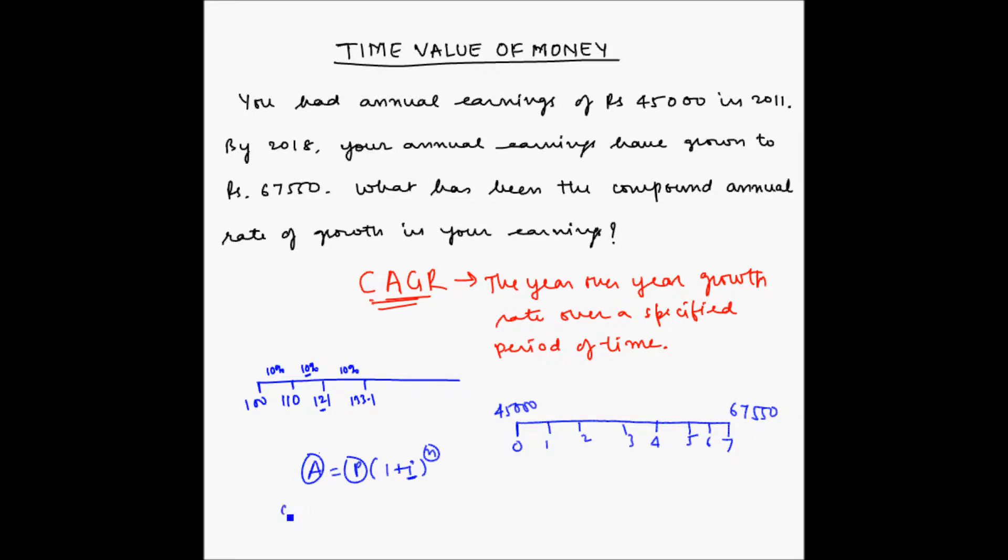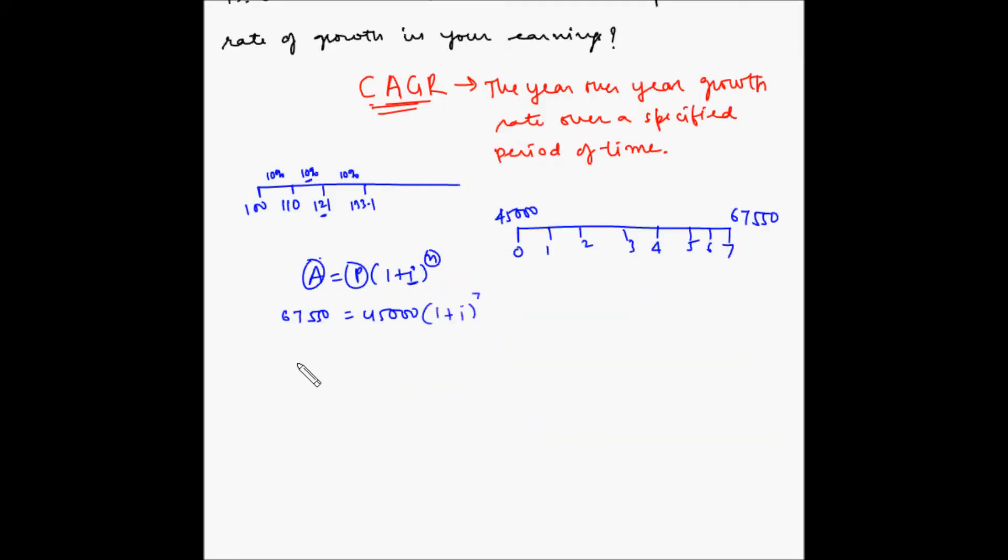So A is 67,550, P is 45,000 times (1 plus I) to the power N, N is 7. So (1 plus I) to the power 7 equals 67,550 divided by 45,000, or (1 plus I) is equal to the 7th root of 67,550 divided by 45,000. So let us find this out.